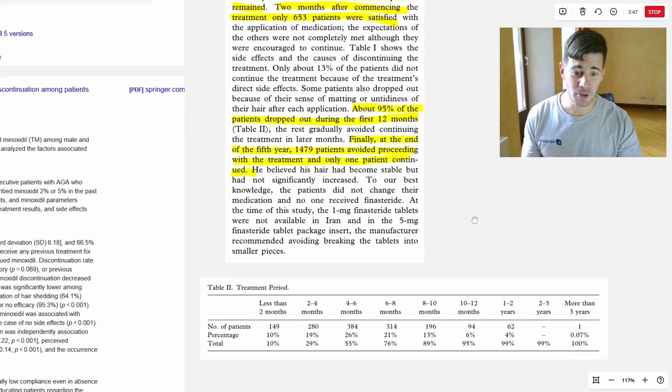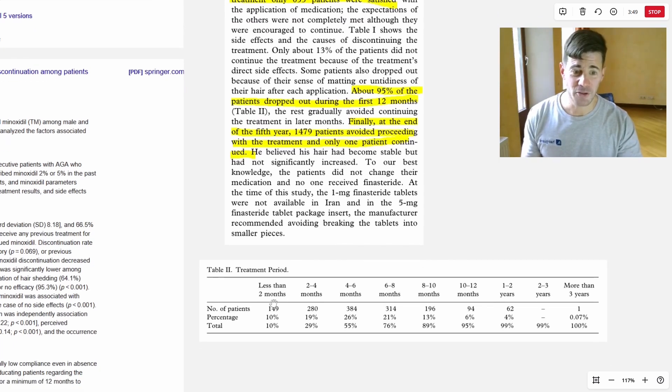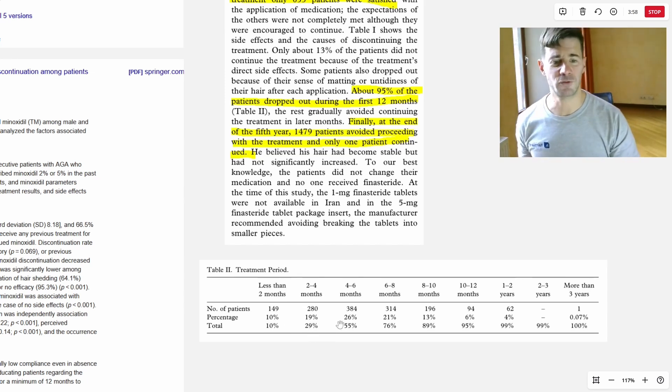And in this table, you can see here how this progressed over time. Less than two months in, a 10% dropout. Then two to four months in, at the end of four months, 29% accumulated dropout. At six months, more than half had dropped out. Then at 12 months, you go to the 95% dropout. Two years, 99%. And at the end of three years, just one person remained, which if you round it up, it's 100%.